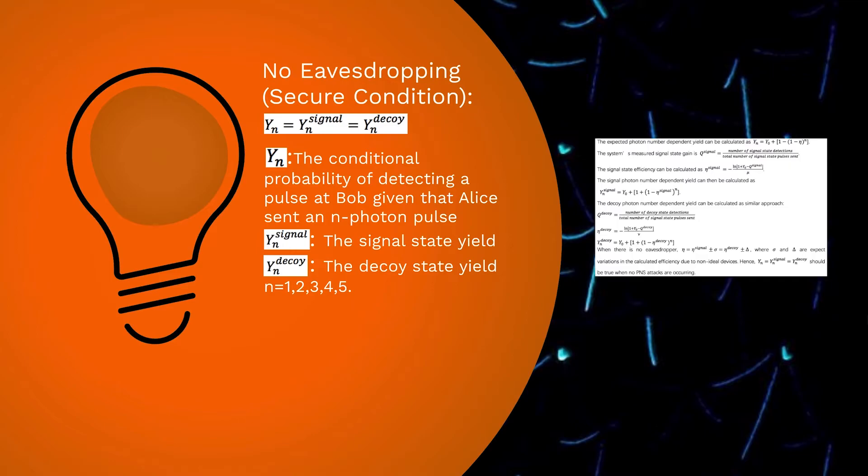Finally, the estimated signal and decoy photon number dependent yields are compared. And if there is no eavesdropper, we expect Y_N equals Y_N^signal and Y_N^decoy, while Y_N represents the conditional probability of detecting a pulse at Bob given that Alice sends an N-photon pulse.